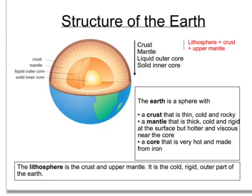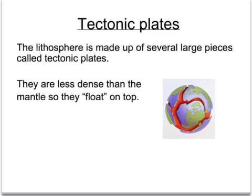The lithosphere is the cold, rigid outer part of the Earth. It is made up of several large pieces which are called tectonic plates. They float on the surface of the mantle because they are less dense than the mantle.